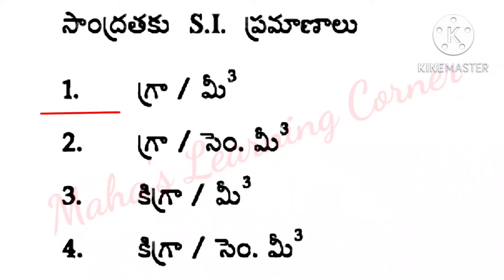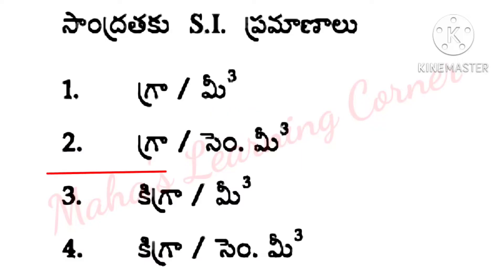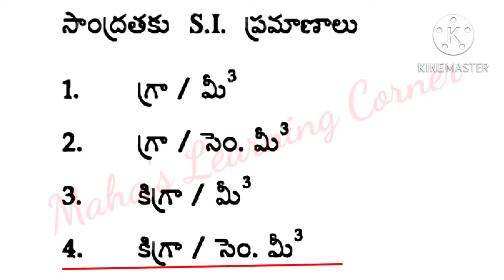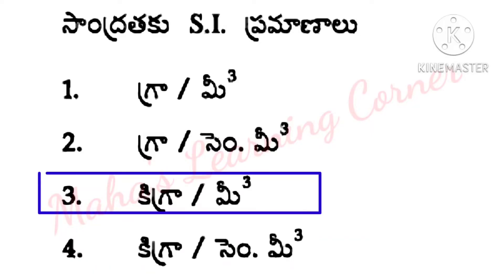Options: Gram per meter cube, Gram per centimeter cube, Kilogram per meter cube, Kilogram per centimeter cube. Correct answer: Option 3 — Kilogram per meter cube.